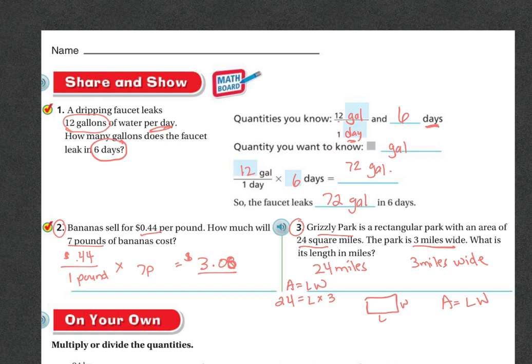So if I divide by three, then I can try to get the length alone. I'm going to do this a different way than I taught you earlier because this way might be a little bit easier. If I divide by three on this side and divide by three on this side, I'm going to get the L alone. And L is going to equal eight because 24 divided by three is eight. So Grizzly Park is going to be eight miles long.